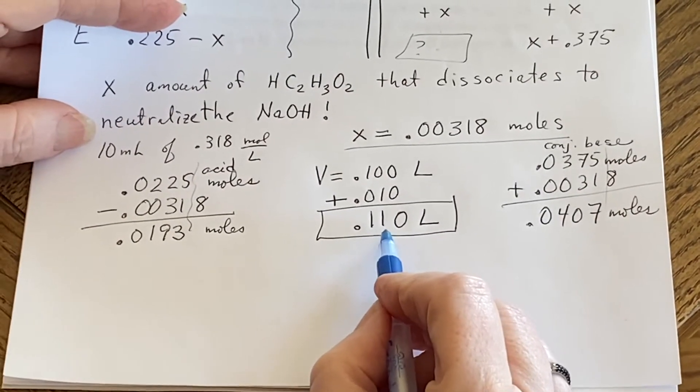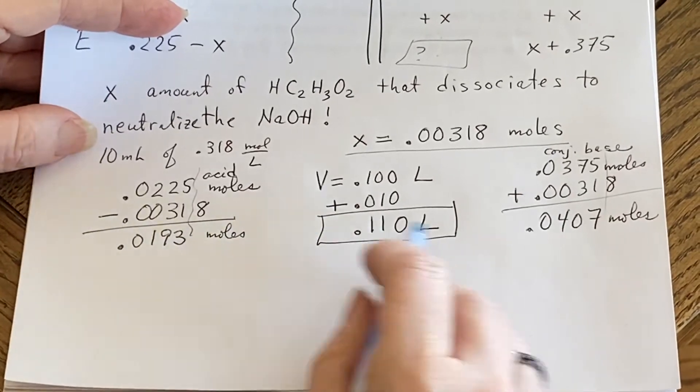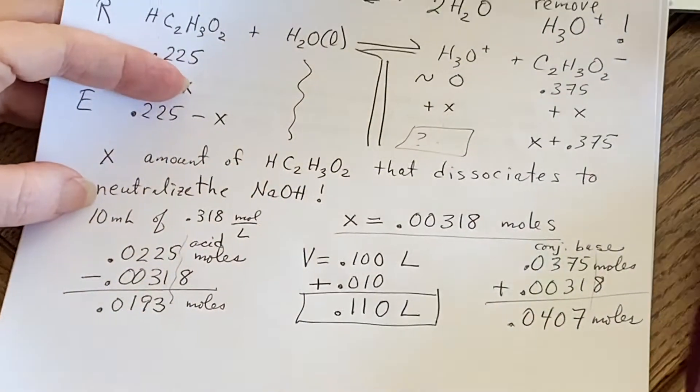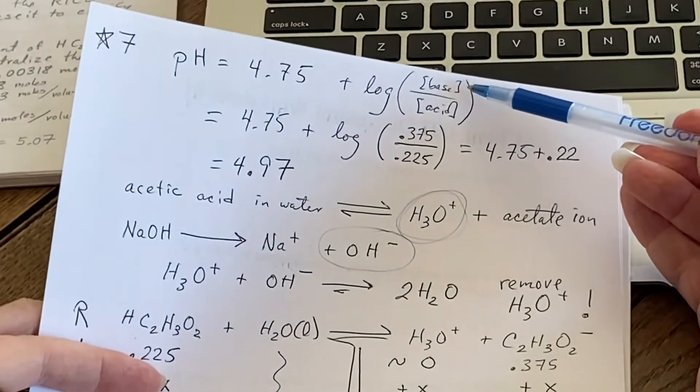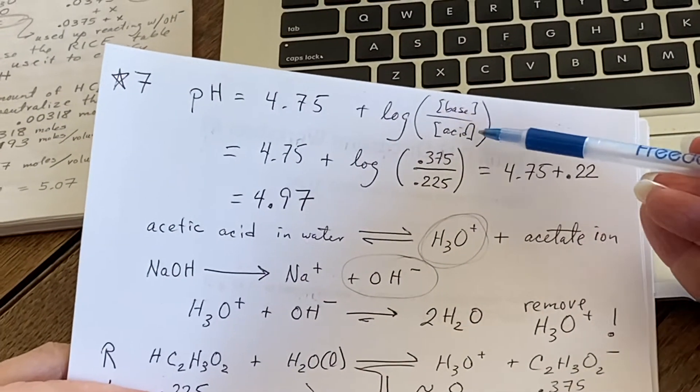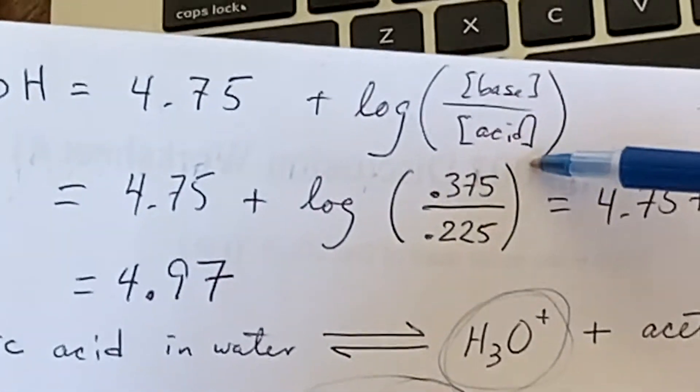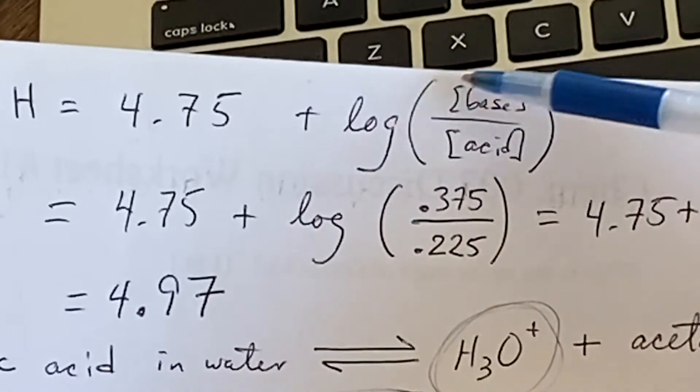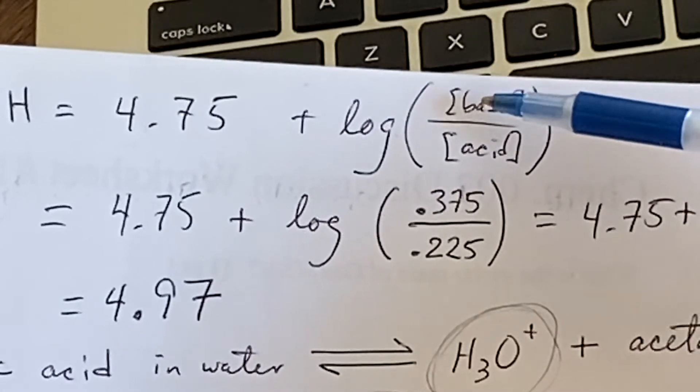One question is, do I care though? Because if I was doing the molarities and I use Henderson-Hasselbalch, they're in the same liquid. So the volumes end up canceling. And I can do Henderson-Hasselbalch just using the moles.